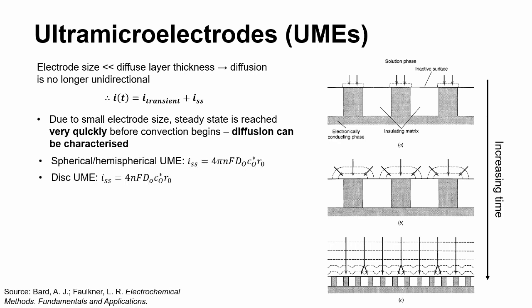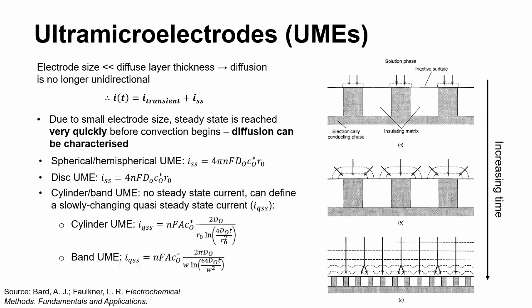For spherical and disc electrodes, this leads to the development of a steady-state current, from which diffusivity can easily be calculated. For cylindrical or band electrodes, a slowly decaying quasi-steady-state current is observed, which can also be measured and plotted against time to obtain the diffusivity.